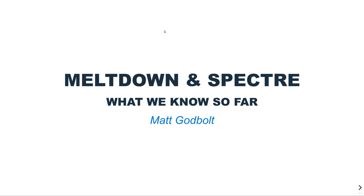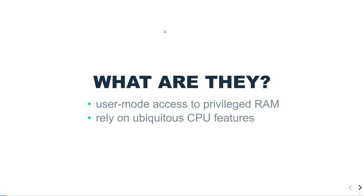Hi, my name is Matt Godbolt and I'm going to be talking about the Meltdown and Spectre attacks on microarchitecture. This is basically what we know so far about them, the mitigations that are being taken and how they work. Meltdown and Spectre are both attacks that allow user mode code to access RAM they shouldn't be able to — that is privileged RAM, be that inside the kernel or inside the process that you're running in that would otherwise not be available to you.